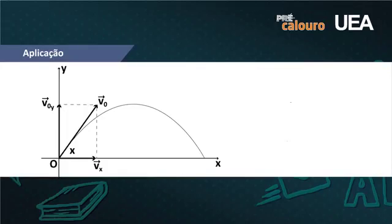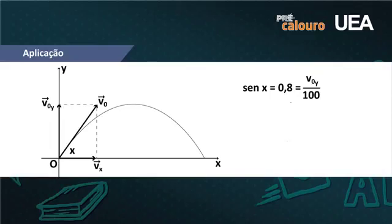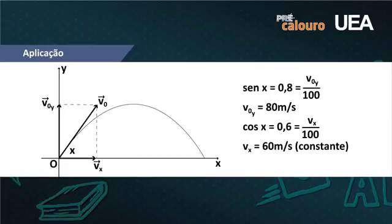Começando pela letra A, usamos as propriedades trigonométricas fornecidas. Sen(x) = V₀y/100 = 0,8, portanto V₀y = 80 m/s — componente vertical da velocidade inicial. Cos(x) = V₀x/100 = 0,6, portanto V₀x = 60 m/s — componente horizontal. Note que essa velocidade horizontal é constante, porque a velocidade no eixo horizontal não se modifica.